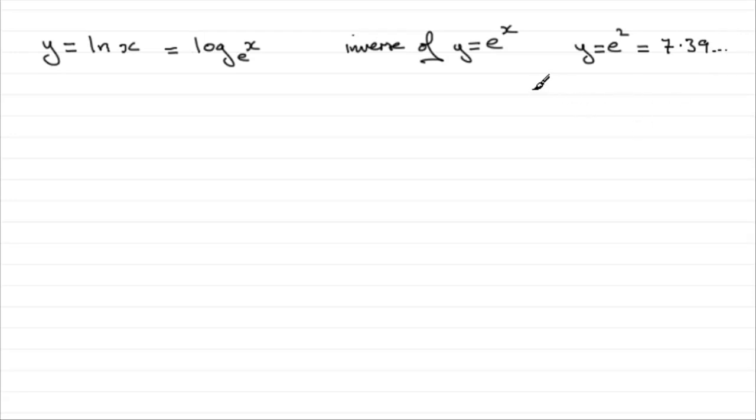So when we're doing the inverse, we're taking the natural log of 7.39 and so on and saying, what number do you have to raise e to? What power do you raise e to in order to get 7.39? Well the answer is 2. It's the inverse function.